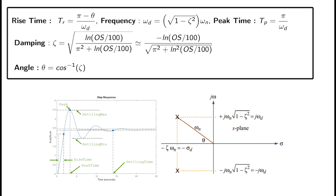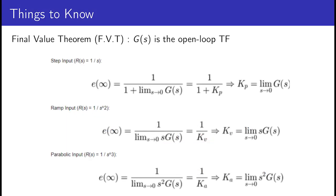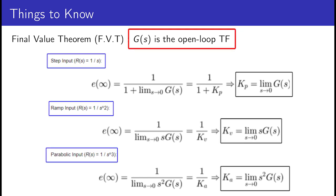One more important thing in control system design is the final value theorem. This tells you what the value of your system will be when time goes to infinity. Since we are working in the Laplace domain, when time goes to infinity, S goes to zero — keep that in mind. Here G(s) is your open loop transfer function, and you can compare it against step, ramp, and parabolic inputs, which were discussed in the last tutorial.